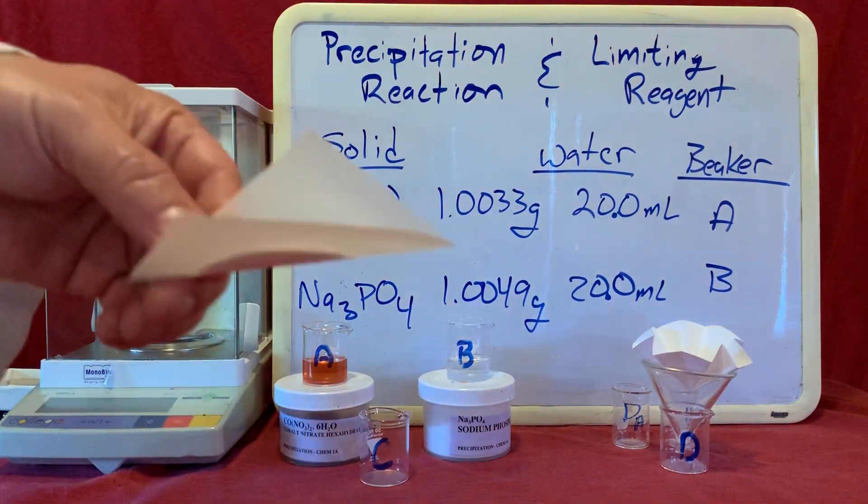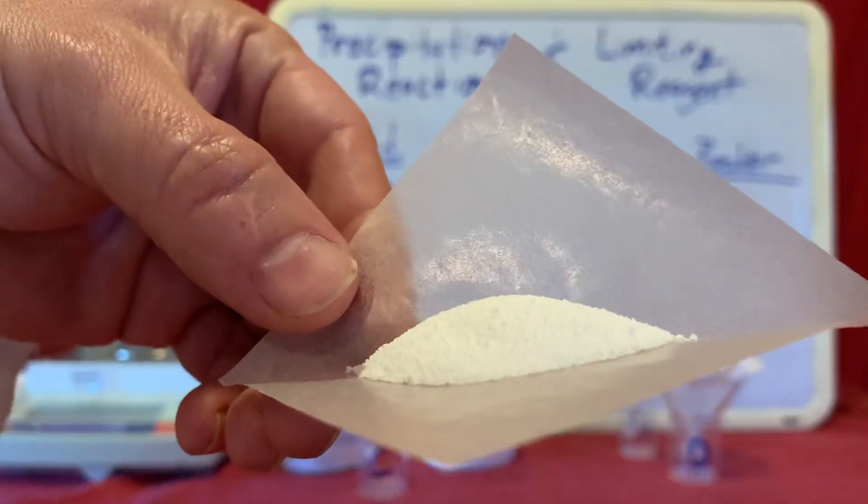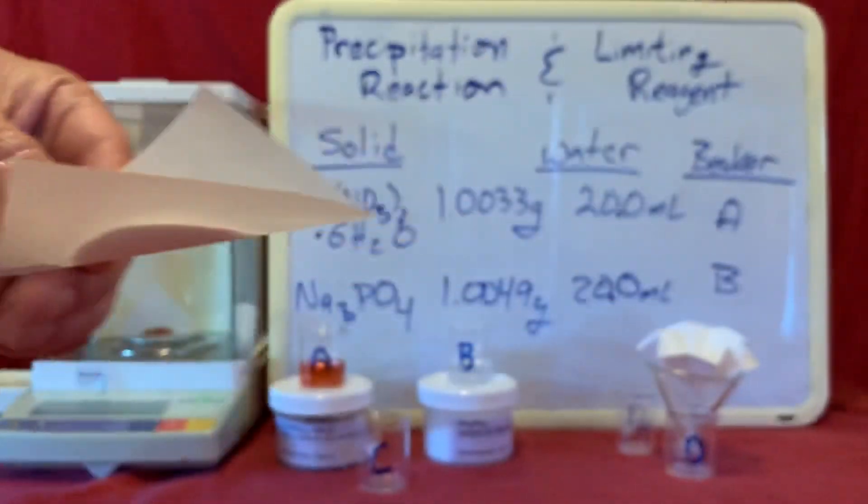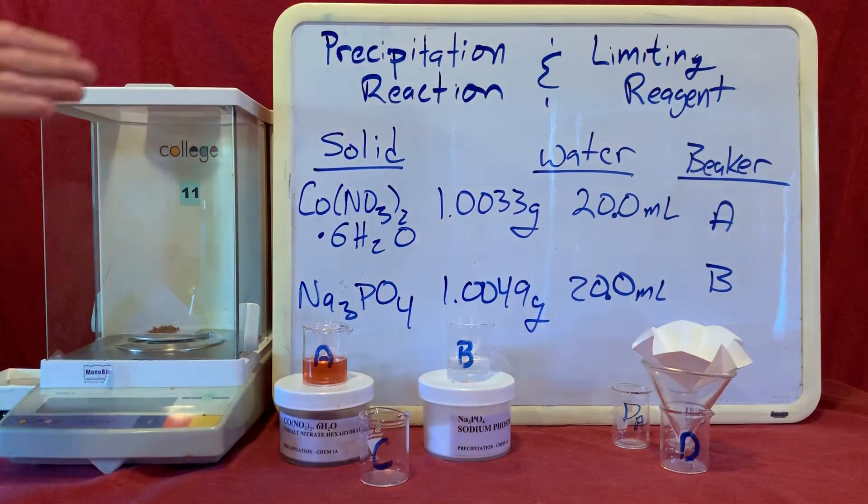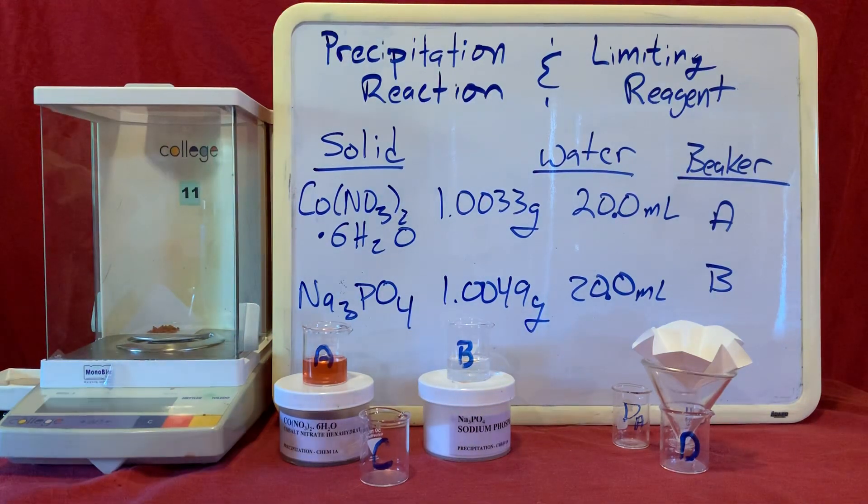I measure out approximately a gram of our sodium phosphate and dissolve it in 20 milliliters of water. You can see the exact amounts that I used up here on the board for all of our materials that I've just referenced.